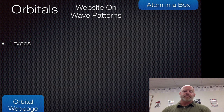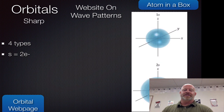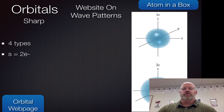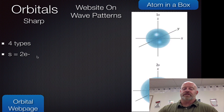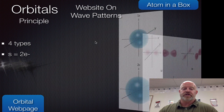We have four types of orbitals. The first is the easiest to look at — it's spherical in nature. We actually call it 'sharp,' so its official term is the sharp orbital, and the S comes from sharp. It can house two electrons inside it. That's our lowest orbital in terms of energy.